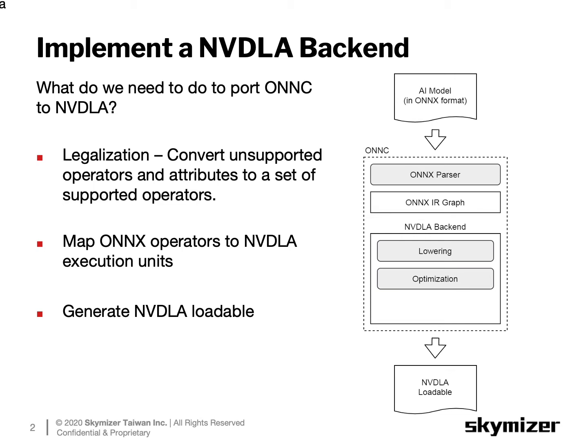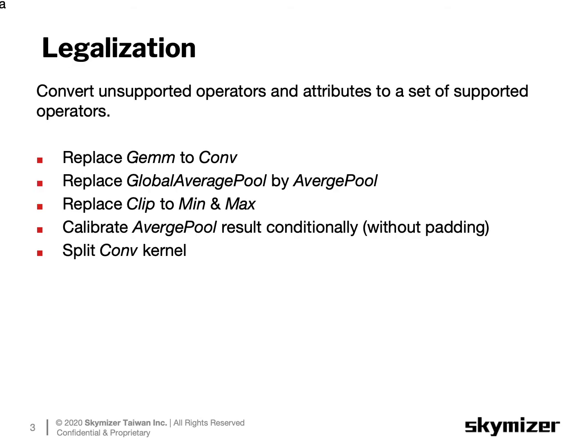Once the whole IR graph can be mapped into an NVIDIA hardware execution sequence, we save all the NVIDIA execution information layer by layer to a loadable. The ONNC framework provides many supports to implement the details in a new backend. We will talk about the framework support when we run into them in each step. For unsupported operators and attributes, we usually rewrite the IR graph with supported nodes to get mathematically equivalent results. This type of transformation is called legalization.